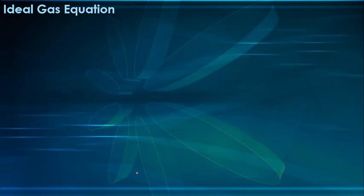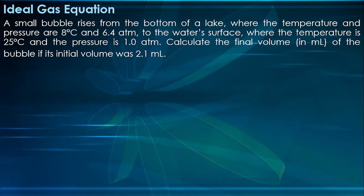For example, in this problem: a small bubble rises from the bottom of a lake where the temperature and pressure are 8 degrees Celsius and 6.4 atm, to the water surface where the temperature is 25 degrees Celsius and the pressure is 1.0 atm. Calculate the final volume in milliliters of the bubble if its initial volume was 2.1 milliliters.